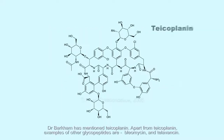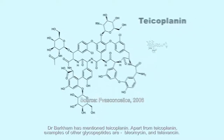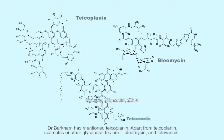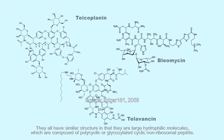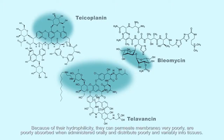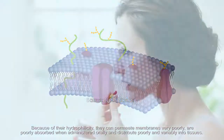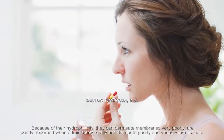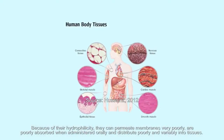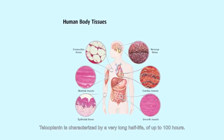Apart from teicoplanin, examples of other glycopeptides are bleomycin and telavancin. They all have similar structure in that they are large hydrophilic molecules composed of polycyclic or glycosylated cyclic non-ribosomal peptides. Because of their hydrophilicity, they permeate membranes very poorly, are poorly absorbed when administered orally, and distribute poorly and variably into tissues. Teicoplanin is characterised by a very long half-life of up to 100 hours.